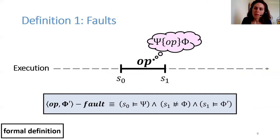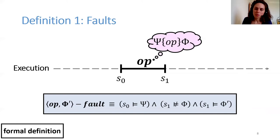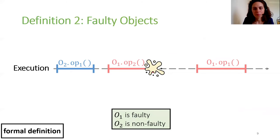We first define the functional fault concept. Given an operation op, its precondition psi, its postcondition phi, and some relaxed postcondition phi prime, we say that an op-phi-prime fault occurred if psi is satisfied when op is invoked, phi is not satisfied when op terminates, but the relaxed postcondition phi prime is satisfied when op terminates. Note that we assume a structured fault, which means that the relaxed postcondition phi prime must exist.